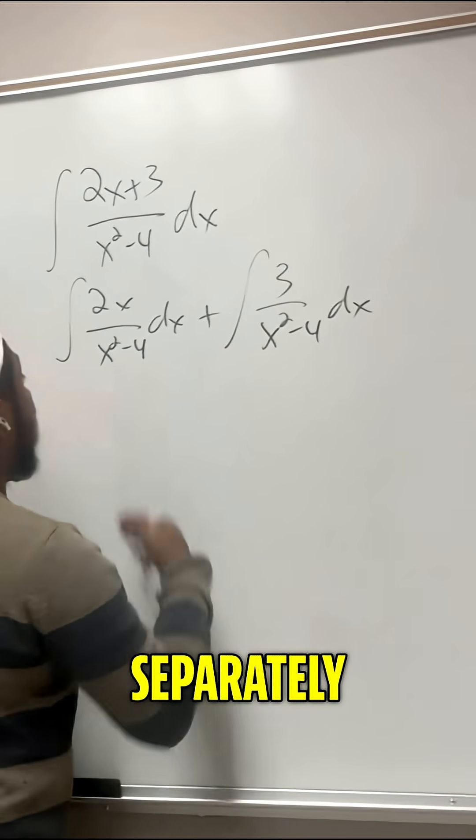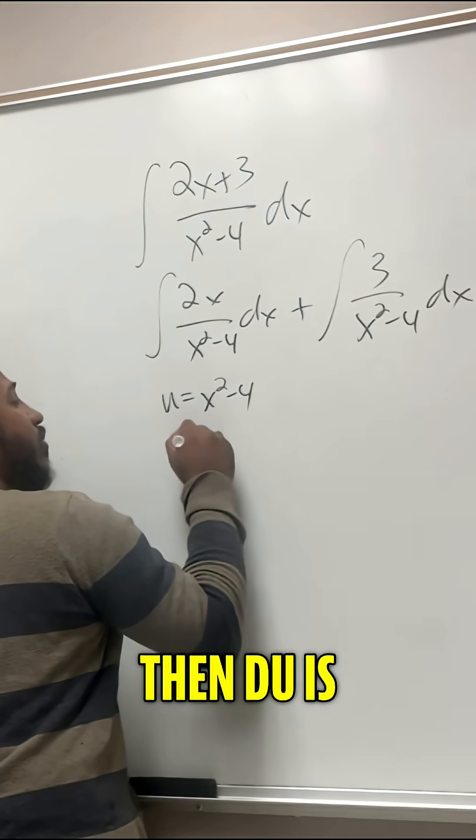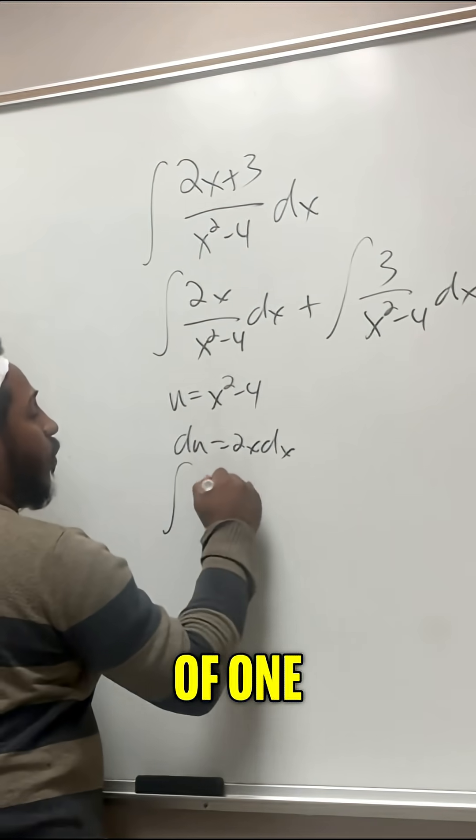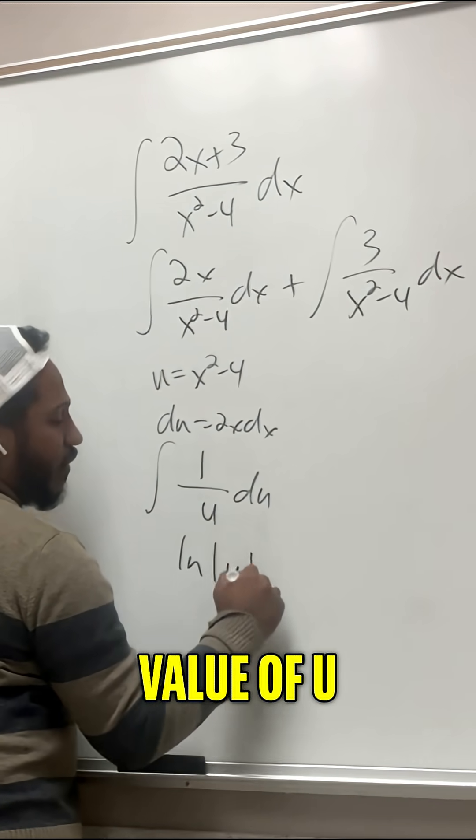Now we can evaluate these integrals separately. So this one here, to evaluate, we can use a u sub. Let u equal x squared minus 4, then du is just 2x dx. Exactly what we have. And so this becomes the integral of 1 over u du, which of course is the ln of the absolute value of u.